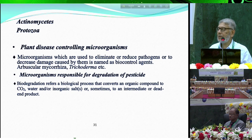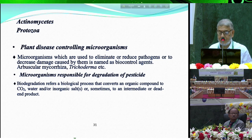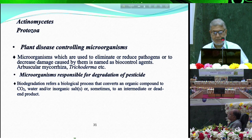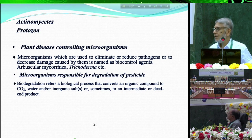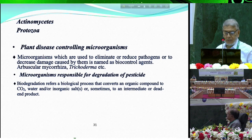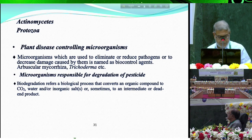Protozoa found in soil feed on noxious microorganisms and maintain soil in harmonious condition. Some microorganisms like Trichoderma and Rhizobium can also control plant diseases. Pesticides applied indiscriminately in agricultural land are degraded by certain microorganisms that convert toxic pesticides to non-toxic forms, making the nutrients available for plant uptake.